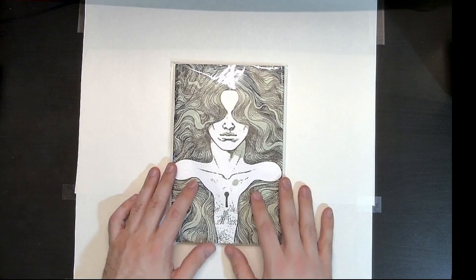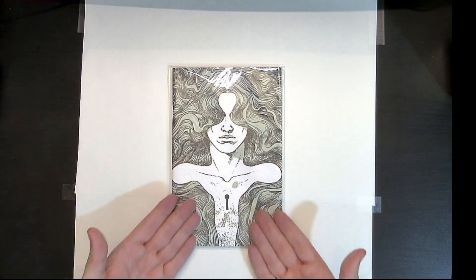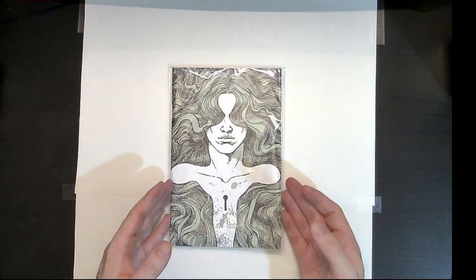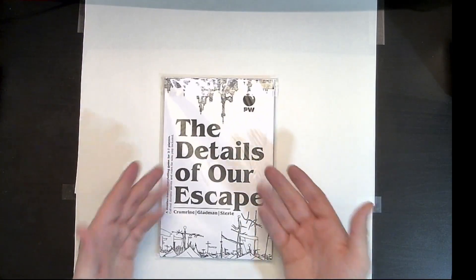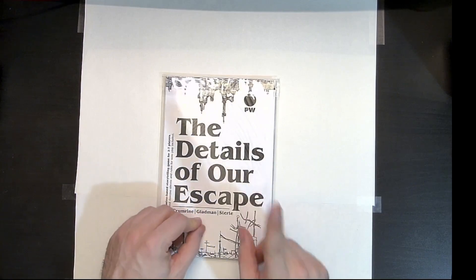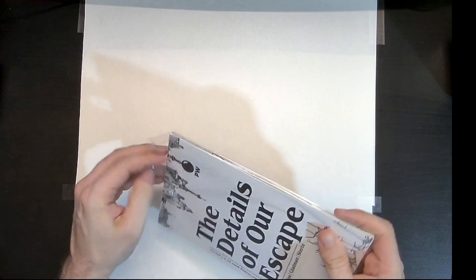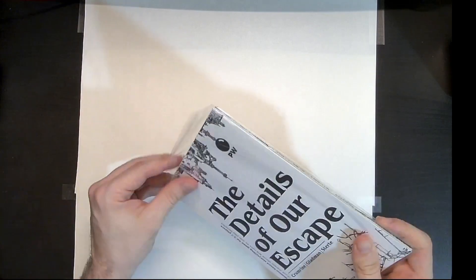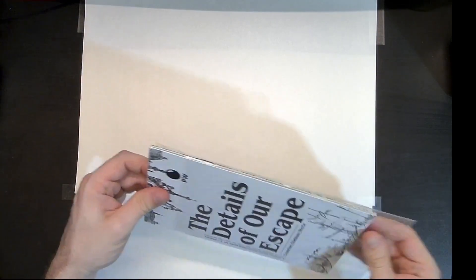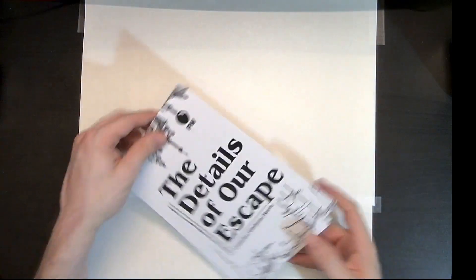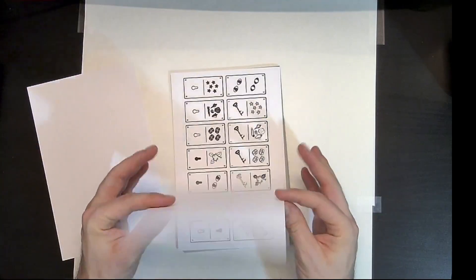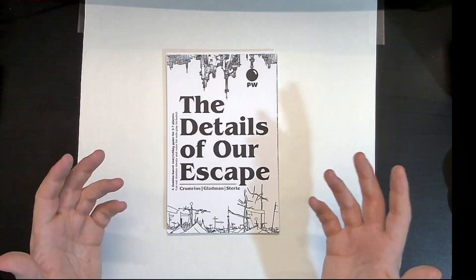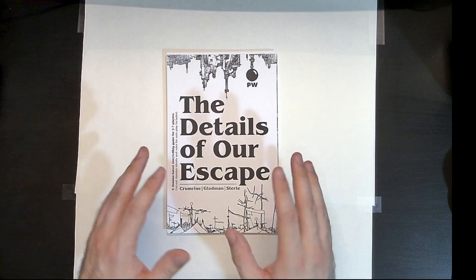This is The Details of Our Escape. Here is the actual manual itself still inside the bag, and here is our title, but this is not the manual. Instead, actually, in here we have something interesting, because as we open up the package, we have dominoes, paper dominoes. So let's go ahead and talk a little bit about the game before we hop into.